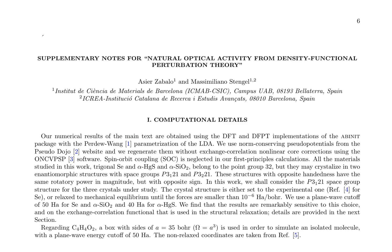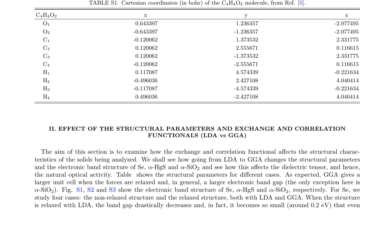The effect of structural parameters and exchange-correlation functionals, LDA versus GGA, on the solids is examined. The structural parameters for different cases are presented, showing that GGA gives a larger unit cell when forces are relaxed and, in general, a larger electronic band gap. The electronic band structure of Se, α-HgS, and α-SiO2 is displayed, with four cases studied for Se: the non-relaxed structure and the relaxed structure, both with LDA and GGA.